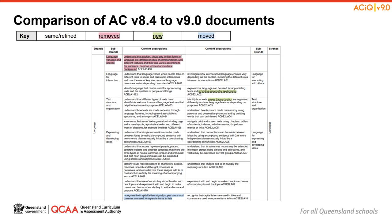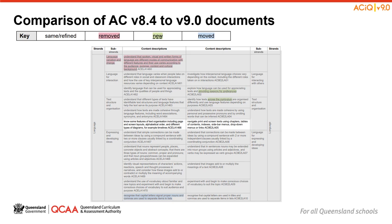Shown on screen is a snip of the Year 2 document, which shows how the changes are colour coded. If something has been refined from version 8.4, it may not be colour coded, and therefore careful consideration is needed when working through a comparison document. For example, in version 8.4, the content description was: Know some features of text organisation, including page and screen layouts, alphabetical order, and different types of diagrams, for example timelines. Whereas in version 9, the content description states: Navigate print and screen texts using chapters, tables of contents, indexes, sidebar menus, drop-down menus, or links.